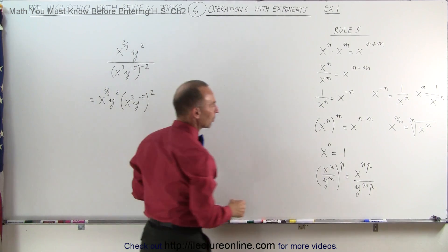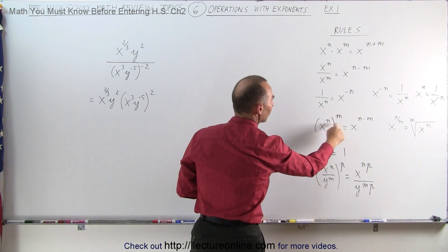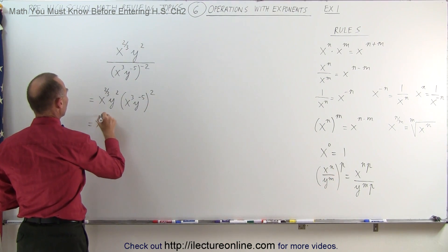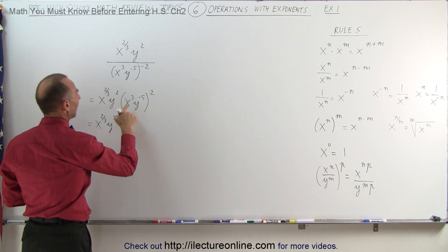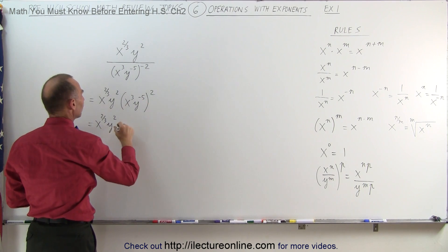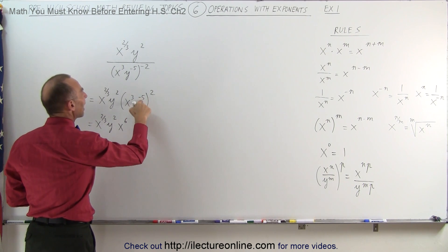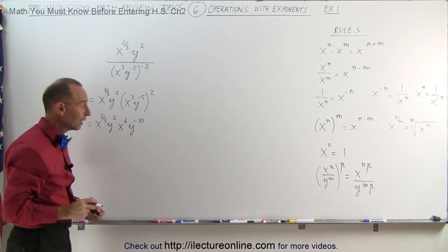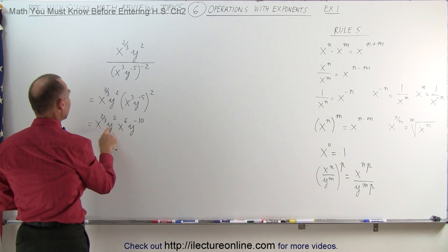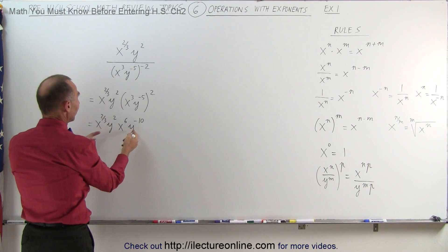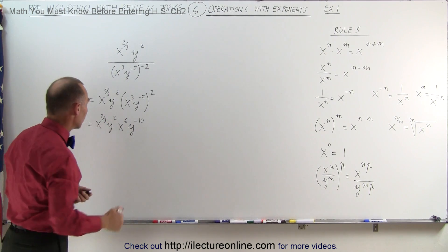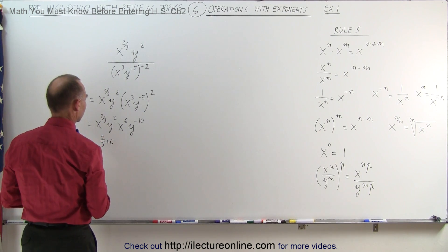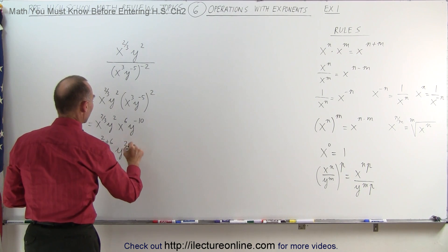Now I'm going to use the rule that when you have something raised to an exponent, you multiply exponents. Applying that rule here: this is equal to x to the two-thirds, y to the second power, x cubed raised to the second power — that's 3 times 2, which is x to the sixth power — and y to the minus 5 raised to the second power is y to the minus 10 power. The next thing is to multiply the x's together and the y's together; since the bases are the same, I just add the exponents. So this equals x to the two-thirds plus 6, and y to the second power minus 10.